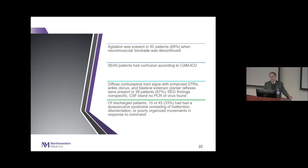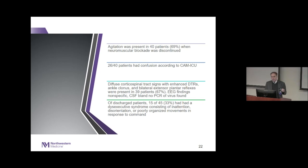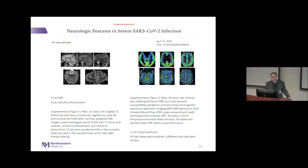Agitation was present in about two-thirds of these patients, and on CAM-ICU most similarly had confusion. Most interestingly, these patients had diffuse corticospinal tract signs — reflexes were up, they had ankle clonus and bilateral extensor reflexes, so long tract signs were present. EEGs were relatively non-specific and CSF was relatively bland — they were unable to identify PCR of the virus in the CSF. Of the patients who survived and were discharged, about a third had severe cognitive difficulties resulting in disorientation, inattention, and inability to follow complex commands.